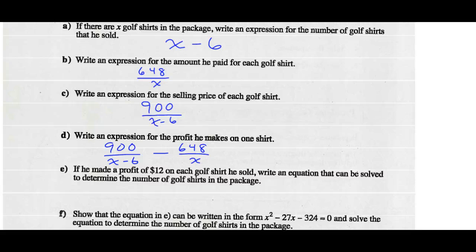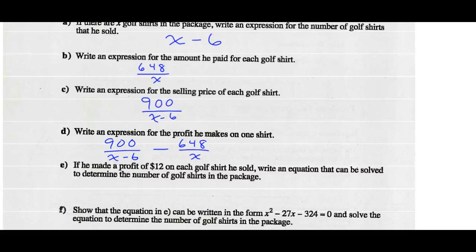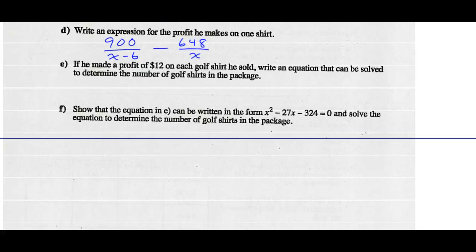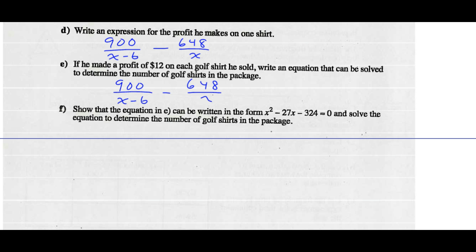Part E: if he made a profit of $12 on every golf shirt he sold, write an equation that could be solved to determine the number of golf shirts in the package. Well, this is the profit we just wrote from above — the price he sold each one for minus the price he paid for each one — and it's going to equal $12.